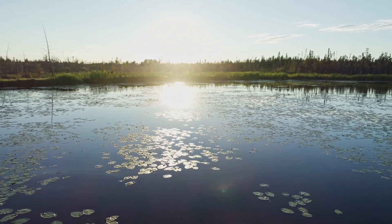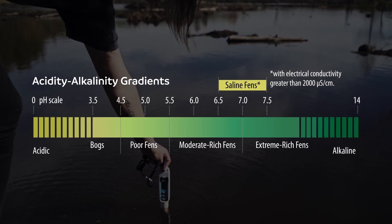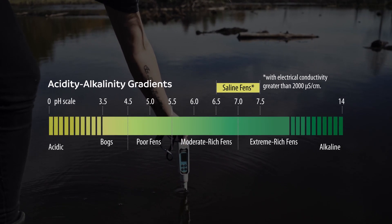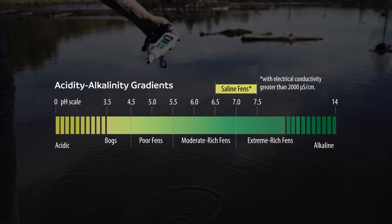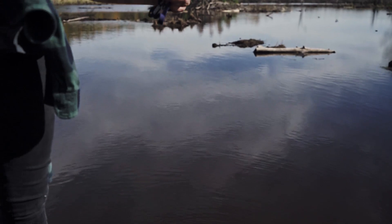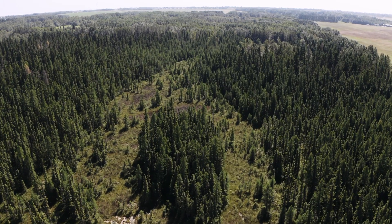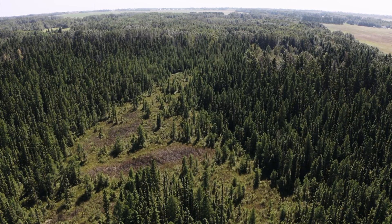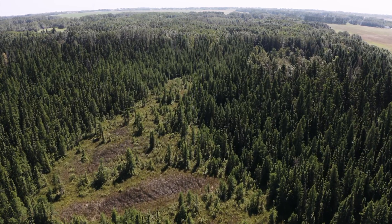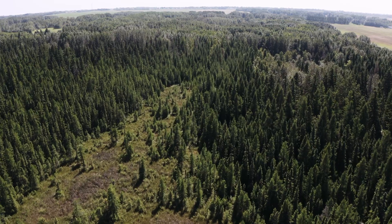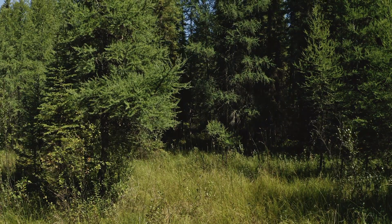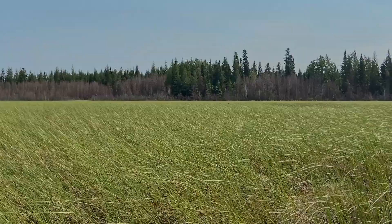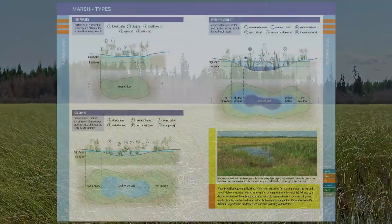Each wetland form can be further divided into types using water permanence and chemistry gradients. These features influence the presence and composition of plant communities adapted to each wetland's conditions. For example, peatlands fall along an acidity-alkalinity gradient. Bogs are acidic with characteristic black spruce trees. Fens are influenced by groundwater connections, introducing more nutrients to the system. With increasing nutrients, tamarack or larch becomes the more dominant tree species.